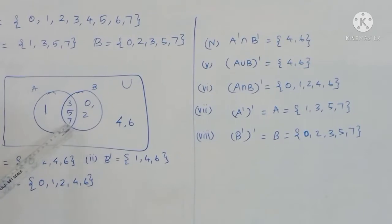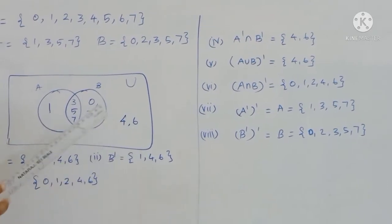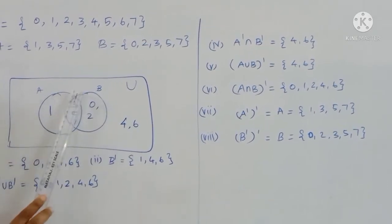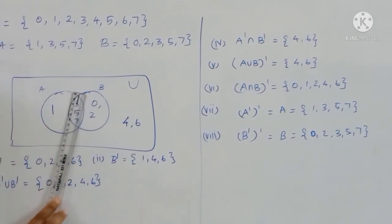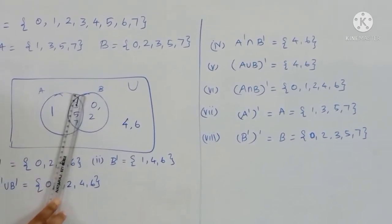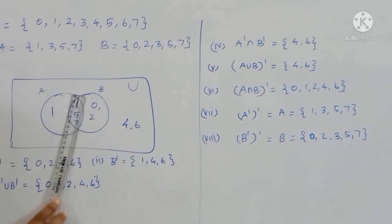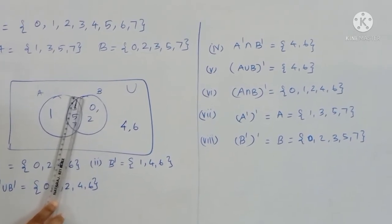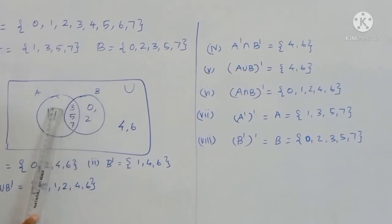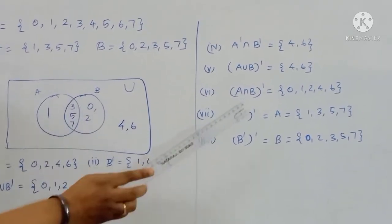A intersection B whole dash value: 0, 1, 2, 4, 6. A' whole complement — this verifies De Morgan's Law.